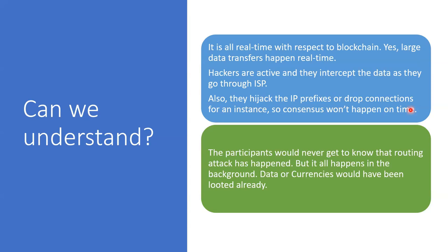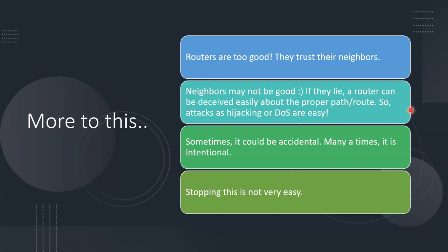It's like waiting for a train that will never come because it has been attacked — data or currencies could have been looted before you could predict it. Routers trust their neighbors, but if neighbors are compromised, routers are deceived into taking a different path, ultimately changing routing, leading to hijacking or delay in consensus. Many times routing attacks appear accidental but are actually intentional. Reports reveal that what initially appears as a non-intentional attack is actually intentional.